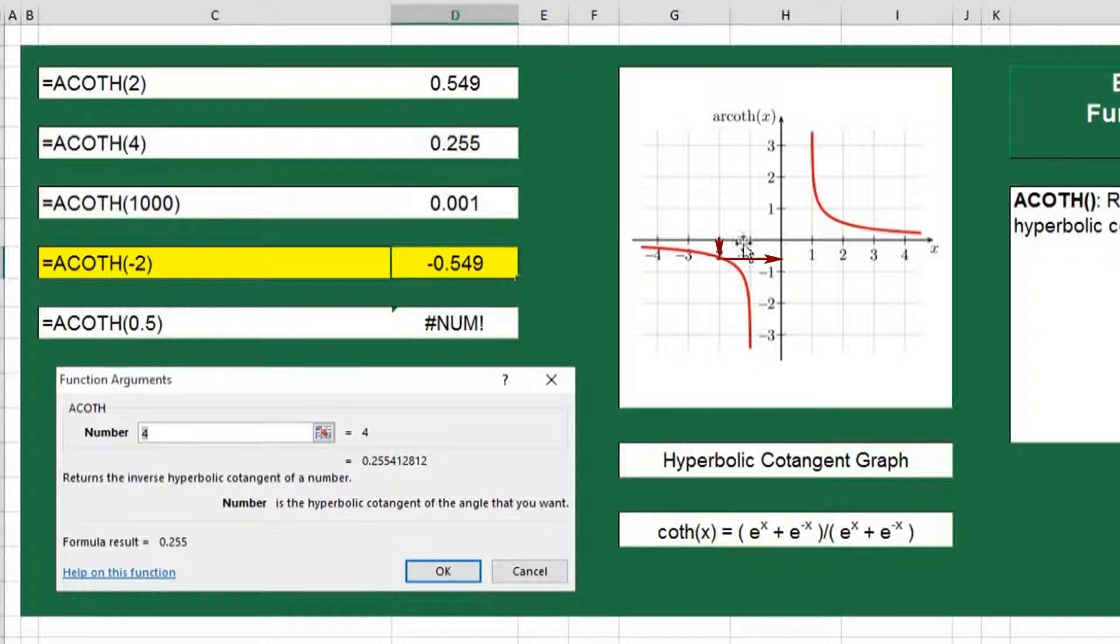The ACOTH function can also work with negative numbers. You'll see it produces a negative 0.549 result from the negative 2.